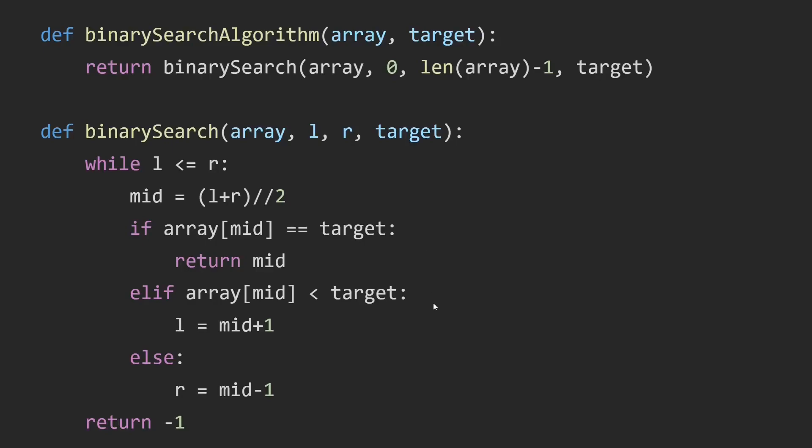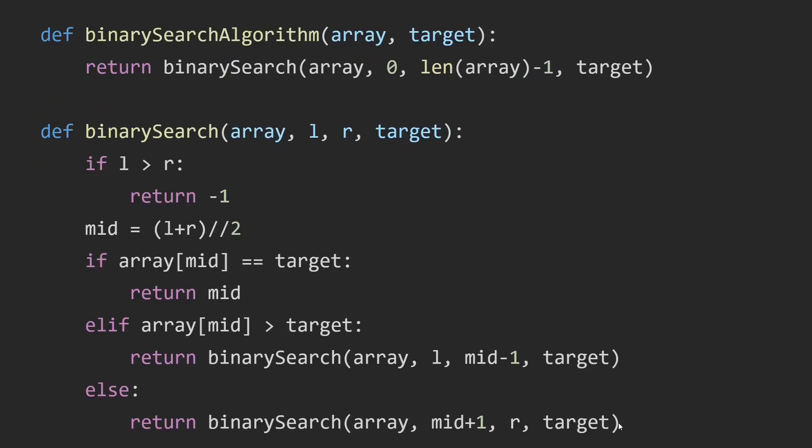If our number in the array at mid is smaller than the target, it means our target is in the second group, so we have to move L to mid plus 1. Lastly, if it's in the first group then we move R to mid minus 1. After the while loop we know that R is to the left of L, and that's when we did not find our target and we return minus 1. Here are the test cases and this is the recursive function of binary search.